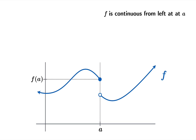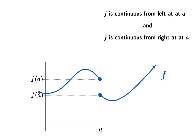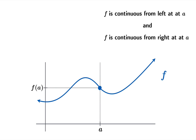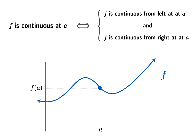Suppose you know the function is continuous from the left, meaning its limiting value from the left equals f of a, and then as you approach from the right that limiting value is also f of a. Since there can only be one function value at a, those must match up, and in fact what we learn is the function is actually just continuous at a. In other words, f is continuous at a if and only if f is both continuous from the left and from the right.